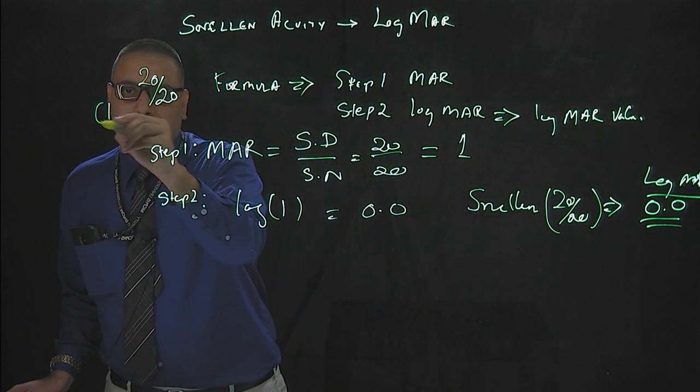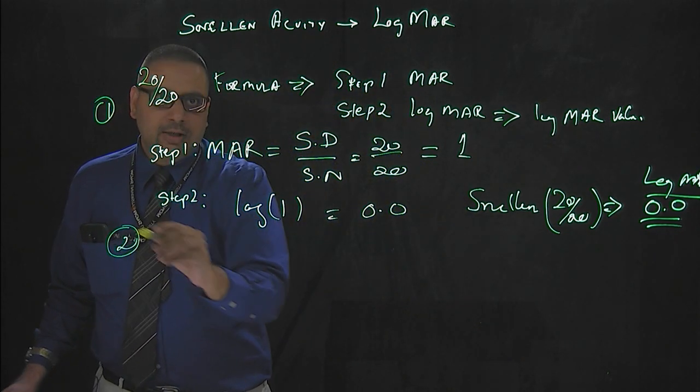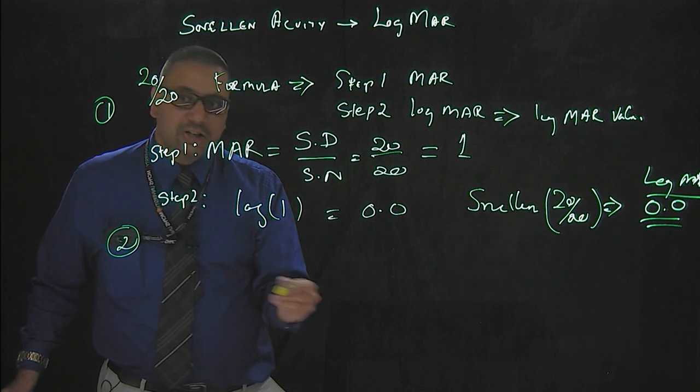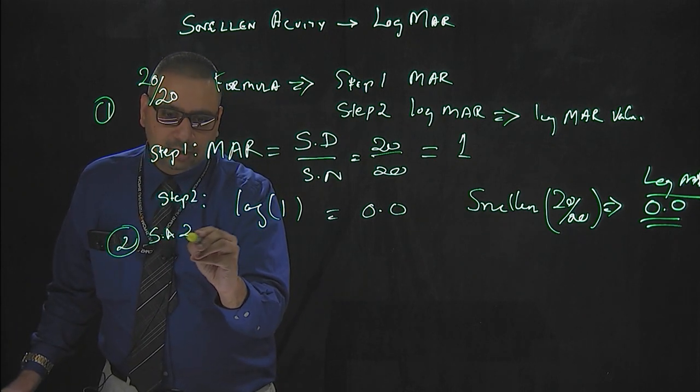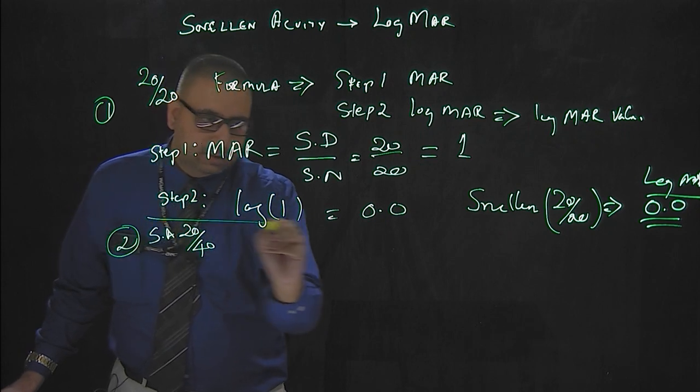One more example. I will show you another example. Let's say the patient's Snellen acuity is 20/40. Let us see how to calculate this.